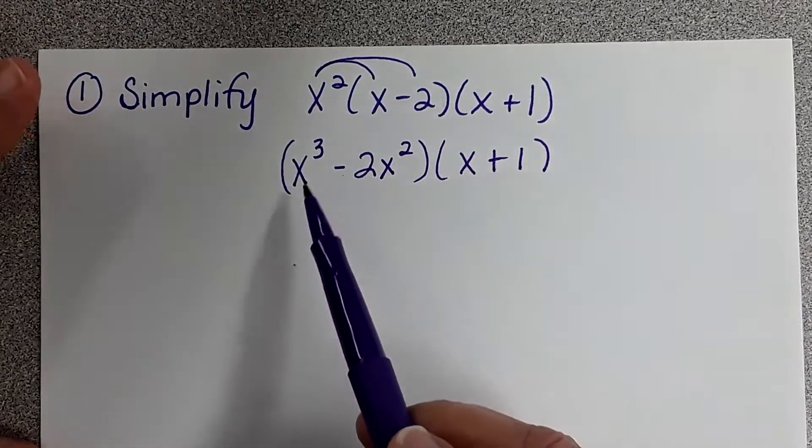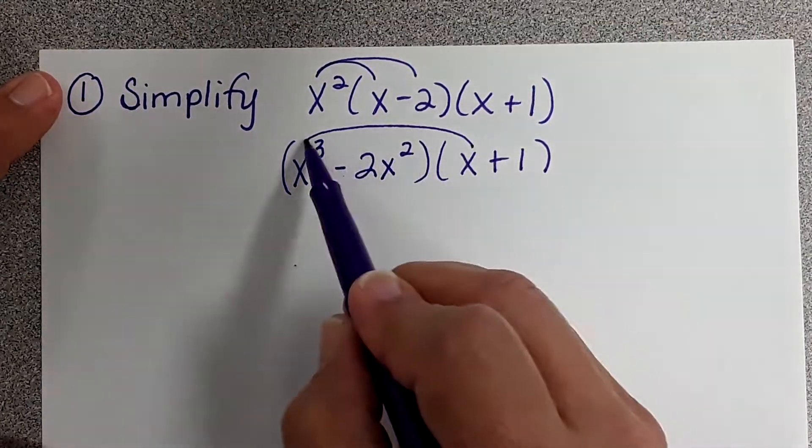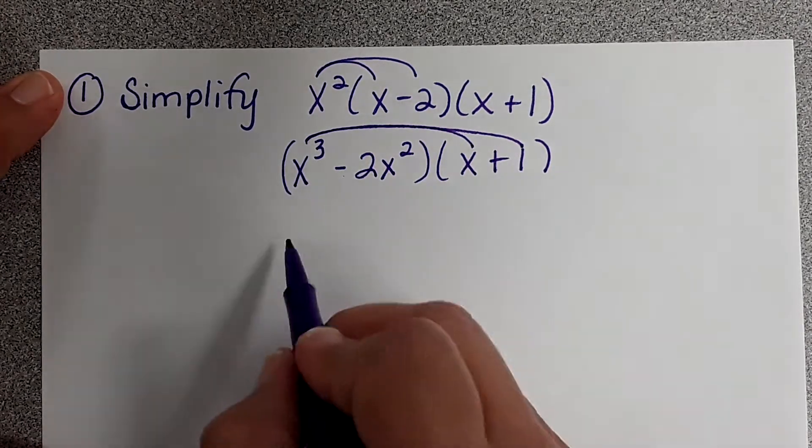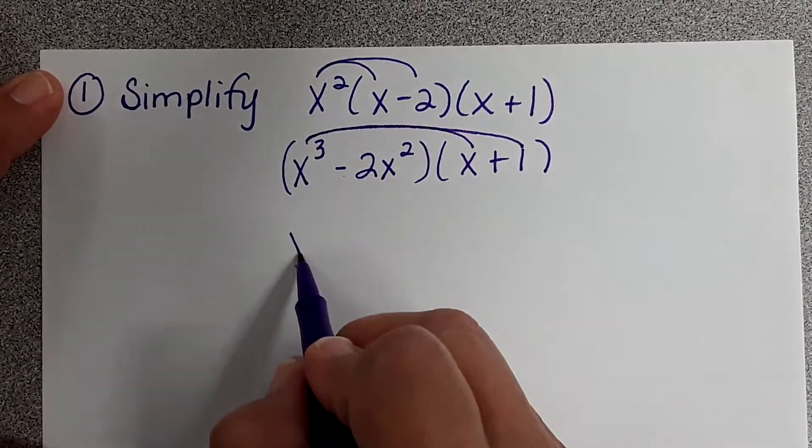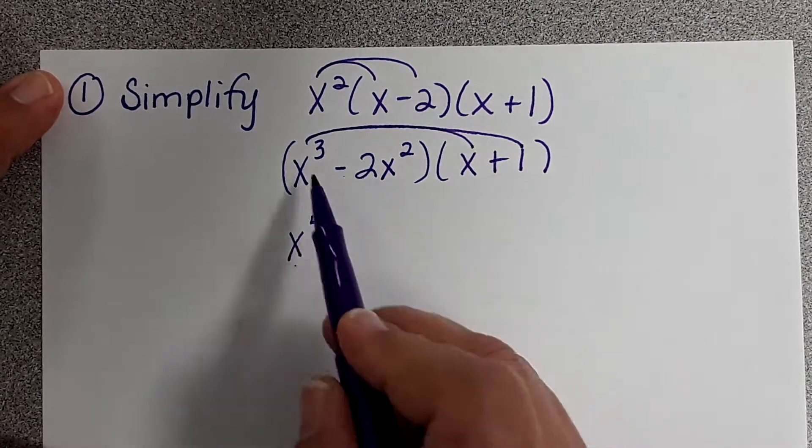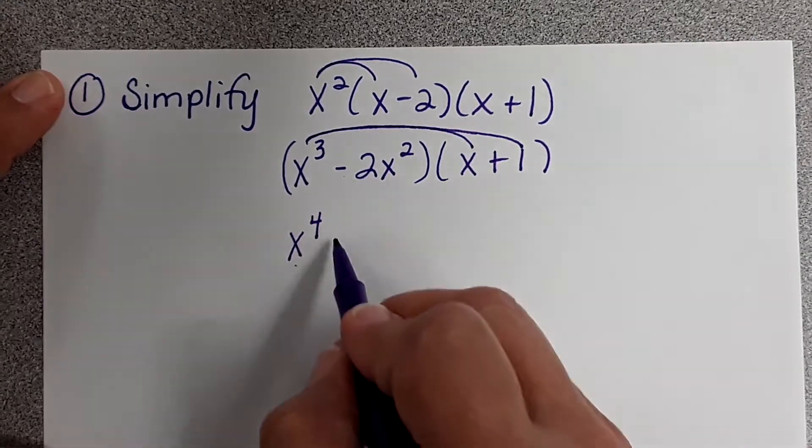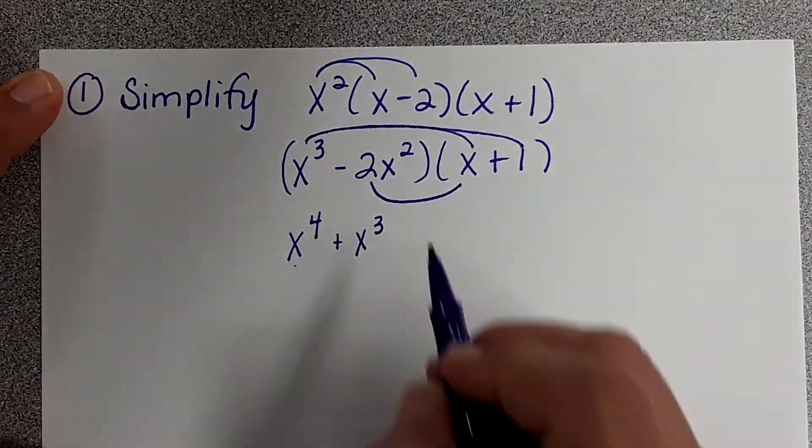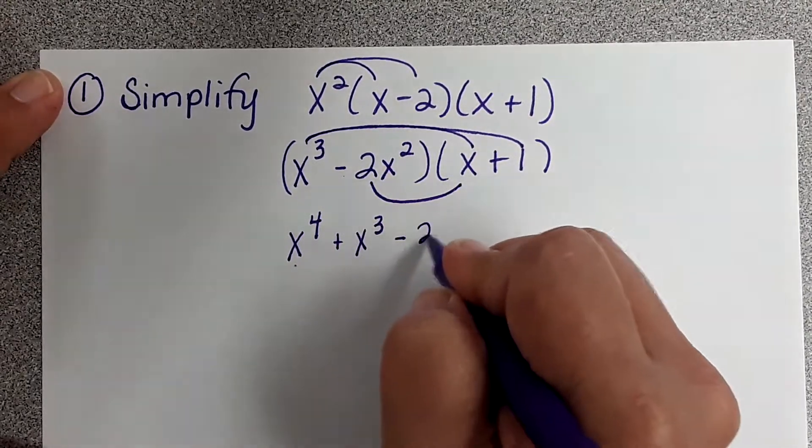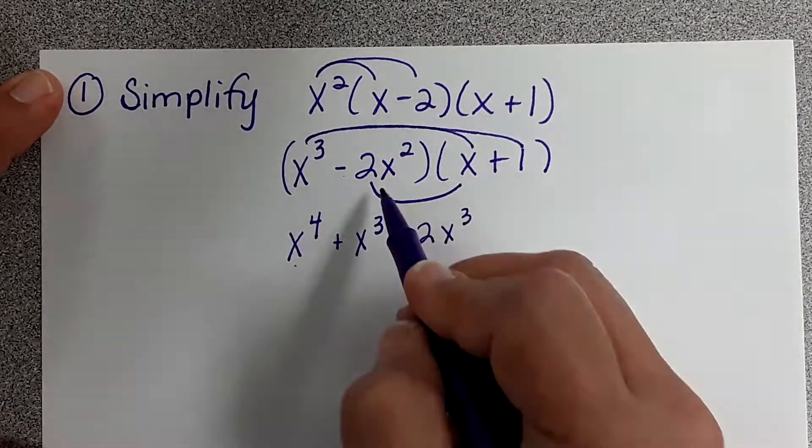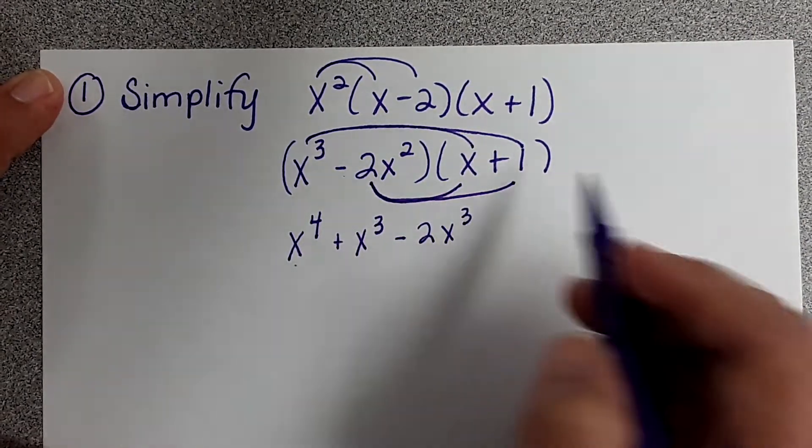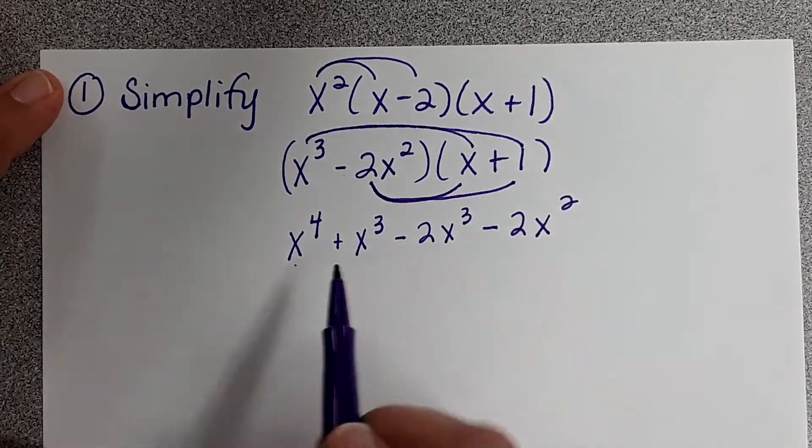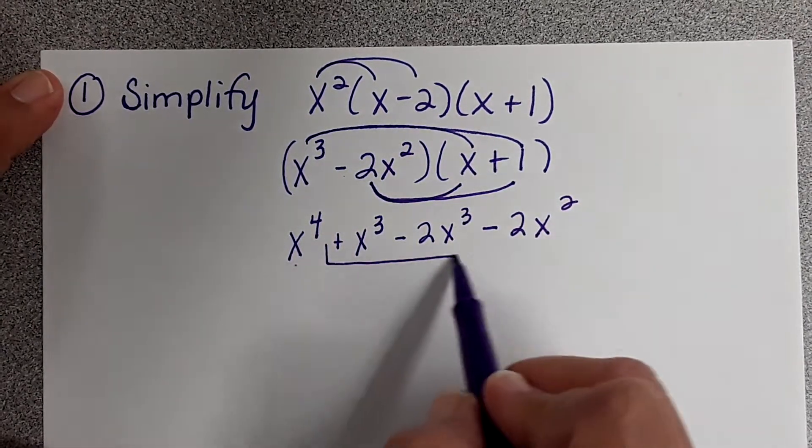Now, I have x to the third, so now I'm going to FOIL. x to the third times x and then x to the third times 1. So x to the third times x is x to the fourth. x to the third times 1 is x to the third. Then negative 2x squared times x is negative 2x to the third. Negative 2x squared times 1 is negative 2x squared. I can combine these two terms.